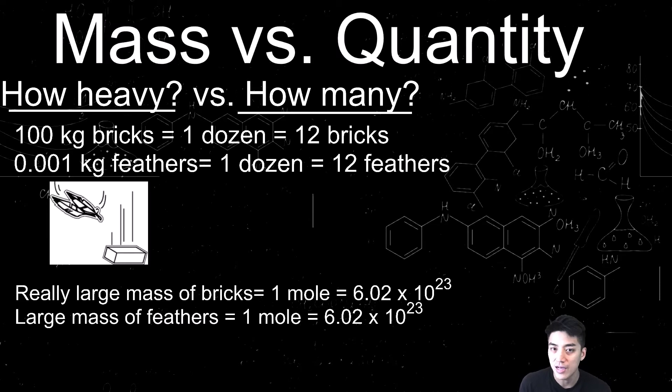Well, the mole might apply to atoms and elements, but you can actually have a mole of anything. For example, if I had 6.02 times 10 to the 23rd bricks, that means I have 1 mole of bricks, and it would be a very large mass. Likewise, I could still have 6.02 times 10 to the 23rd feathers, which means I would have 1 mole of feathers. And it would still come out to a very large mass, but maybe not as much as the bricks.